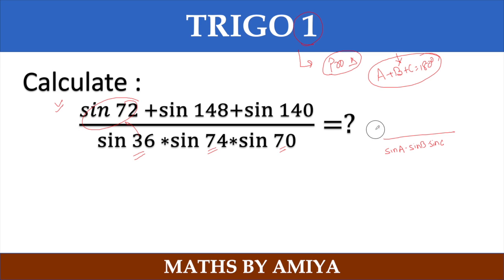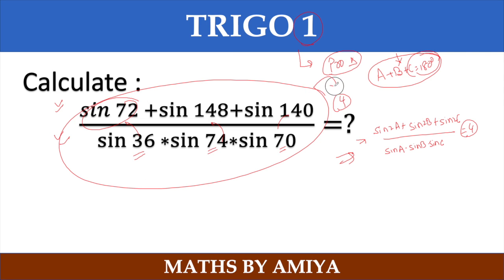If you have sin A into sin B into sin C and the summation is nothing but 180 degrees, you have sin 2A plus sin 2B plus sin 2C. So if you have sin 2A plus sin 2B plus sin 2C upon sin A into sin B sin C, this value is nothing but 4. And if you know this cheat code, the answer is 4. You take any of the examination you have taken. If you have these type of questions, they come from identity and this is the identity. Okay?